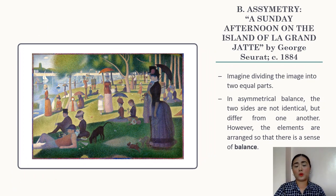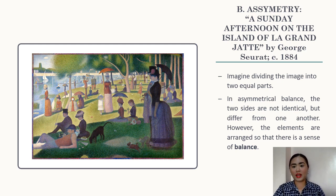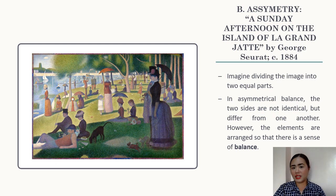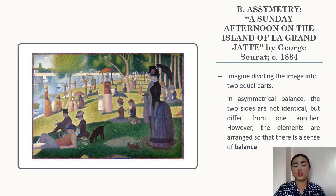The second type of balance is asymmetry. Our example is A Sunday Afternoon on the Island of La Grande Jatte by George Seurat. Imagine dividing the image into two equal parts. In asymmetrical balance, the two sides are not identical but differ from one another; however, the elements are arranged so that there is still a sense of balance. Asymmetry only creates the illusion that one side is identical to the other.